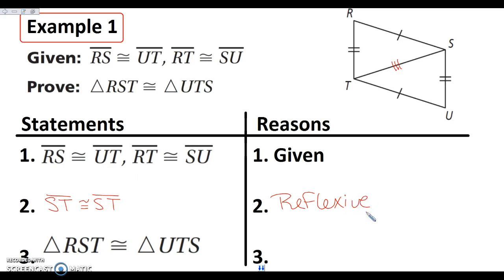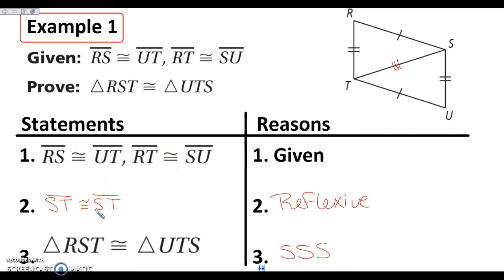So now I have one pair, two pair, three pairs of sides congruent. I can say that my triangles are congruent by Side-Side-Side, because I know that I have three pairs of congruent sides, so the triangles have to be congruent. That is the theorem that we just stated.